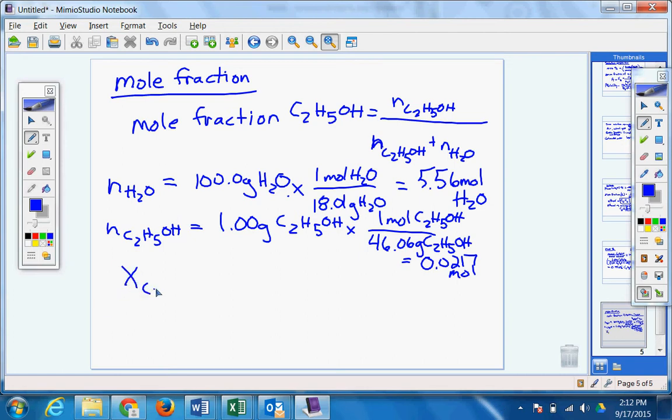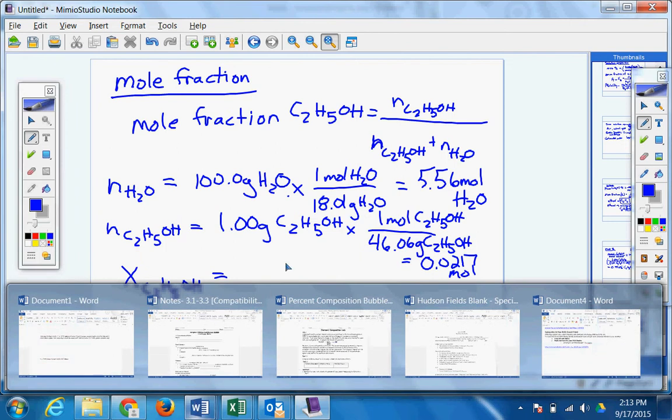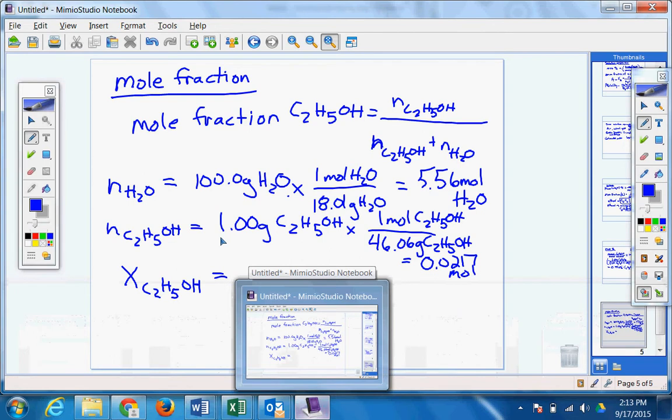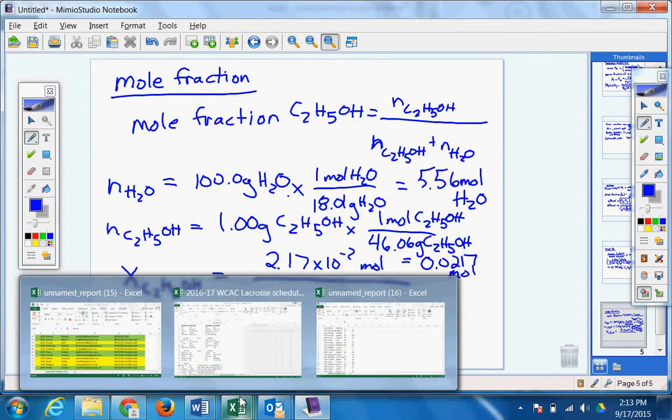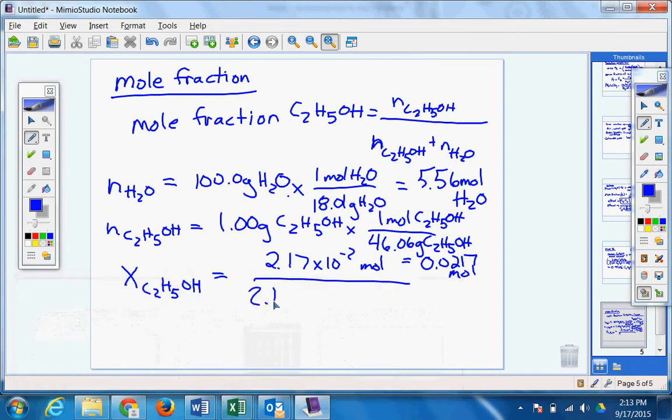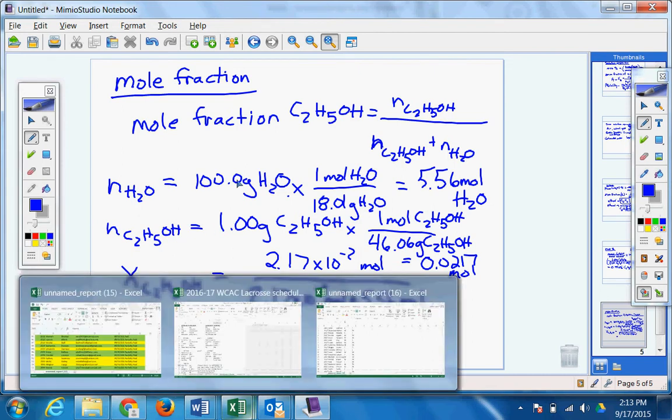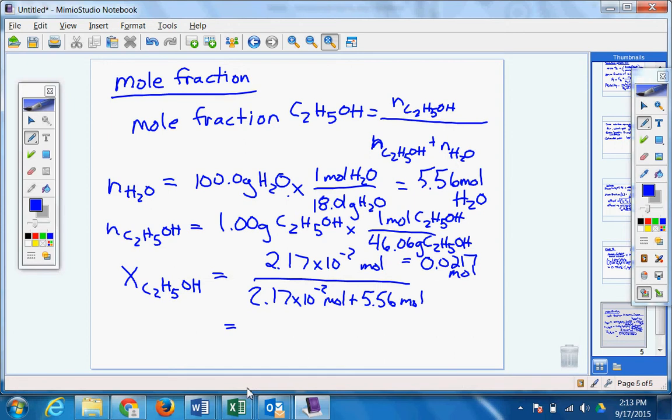So now we do the mole fraction, which is pretty easy. We're going to do X C2H5OH. I'm not writing it this way because I need to write it this way. I'm writing it this way so I can get full credit on my exam for Mr. Hague or the AP exam. So I'm going to take my moles of that. 2.17 times 10 to the negative second mole. I'm going to divide that. I don't care if you tell me what type of mole it is at that point. 2.17 times 10 to the negative second mole plus 5.56 mole.